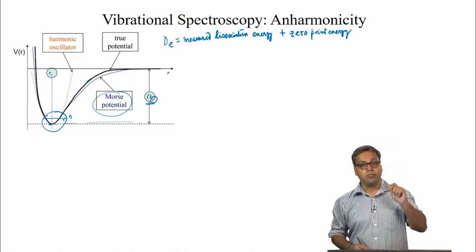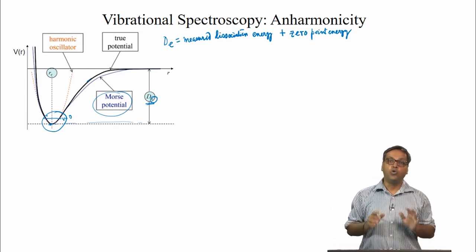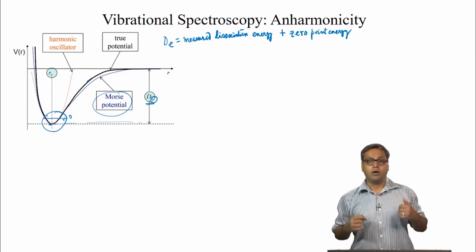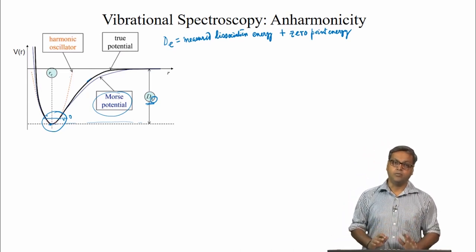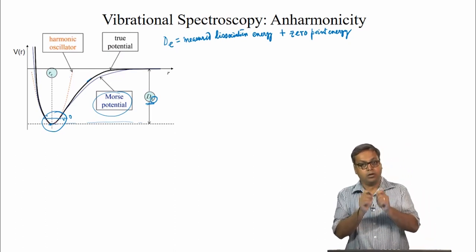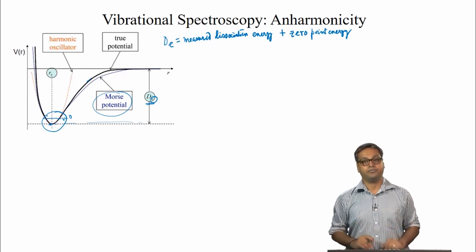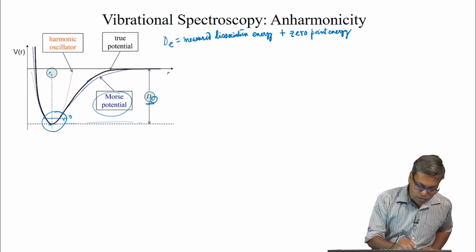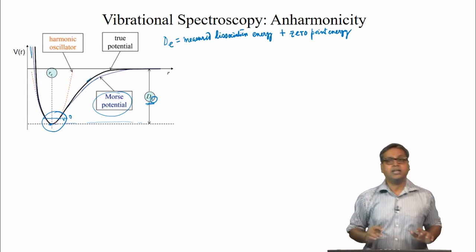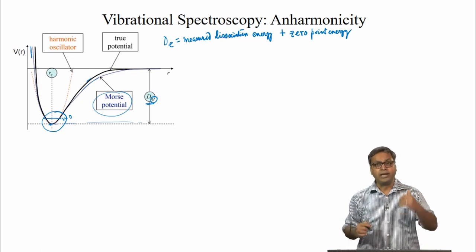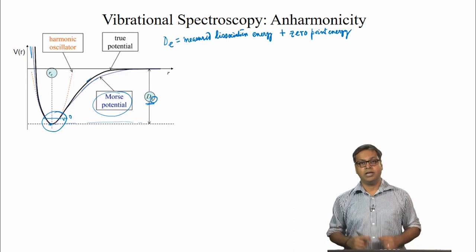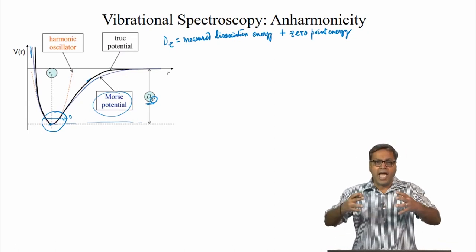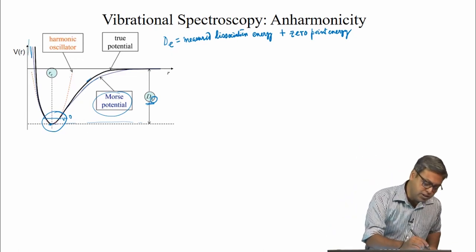If we focus on the harmonic potential curve given by the orange dotted curve, we can see that the harmonic potential represents nicely the true anharmonic potential — the black curve — at the bottom part of the potential energy well. That is why the harmonic potential works well for low vibrational states, that is when the vibrational quantum number V is small. In other words, as long as the displacement is small, the harmonic oscillator will work.